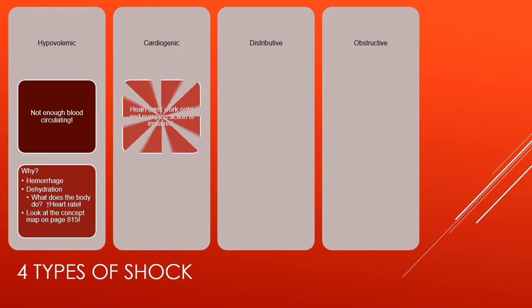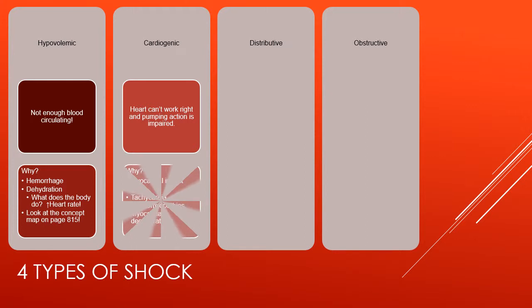In cardiogenic shock, the heart can't work right and the pumping action is impaired. Why is it due to myocardial infarct, ventricular fibrillation, tachycardia, cardiomyopathies, or myocardial degeneration?